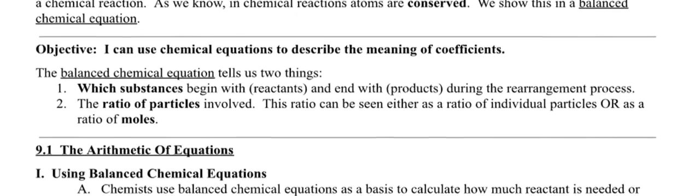Objective: I can use chemical equations to describe the meaning of coefficients. So what is a balanced chemical equation? This is a review from Chapter 8. What does it tell us? Number one, which substances begin with, the reactants, and end with during the rearrangement process. Do you remember back in Chapter 1, didn't we say that a chemical reaction is where bonds are broken and new bonds are formed? That's what we mean by this rearrangement process.